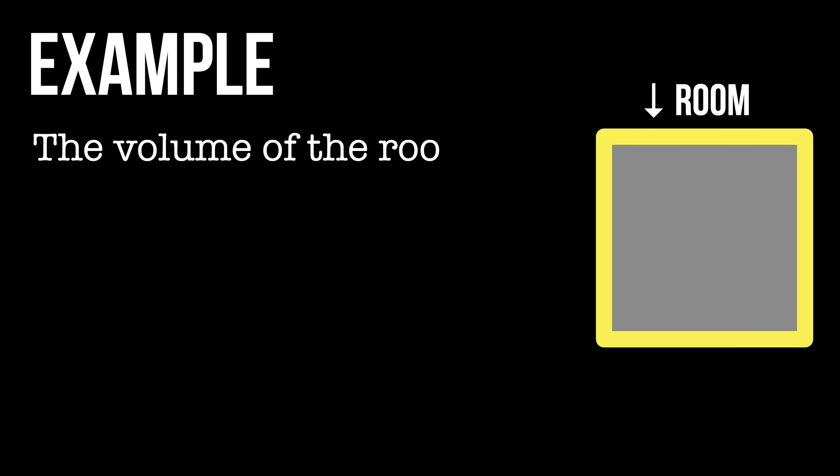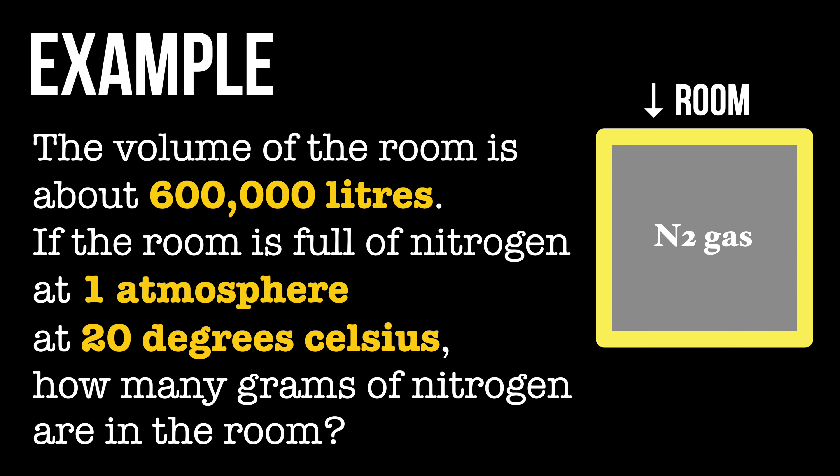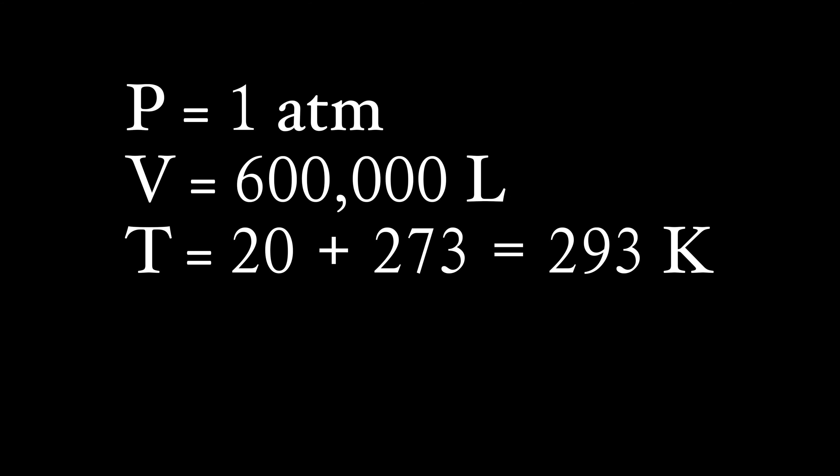So, how do we use the ideal gas law to solve a gas problem? Well, let's look at the following example. The volume of the room is about 600,000 liters. If the room is full of nitrogen at 1 atmosphere at 20 degrees Celsius, how many grams of nitrogen are there in the room? First of all, we write down all the information that we know.